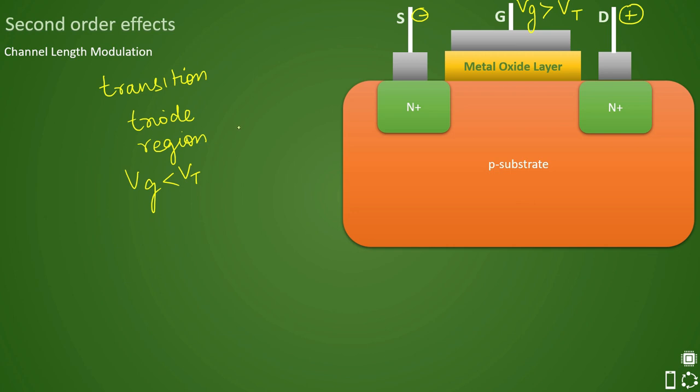So at that time when it transits from triode region to saturation region, that transition happens when you just cross your gate voltage more than threshold voltage. At that time you have sufficient enough current which flows from this region from this source to drain.